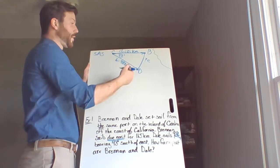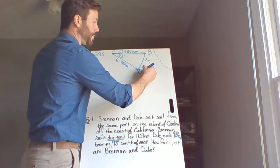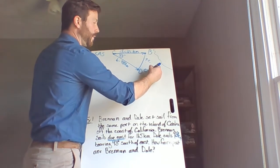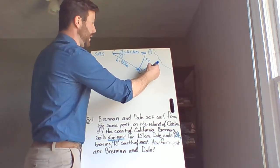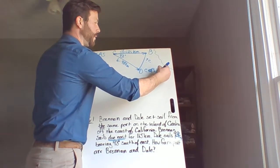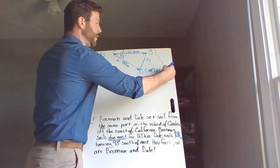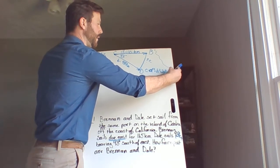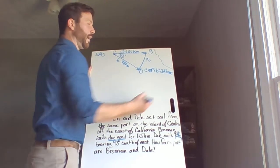So I want to find side C. So that formula for side C is going to be a squared, or in this case, we'll say d squared, plus b squared, minus 2db times the cosine of angle C.